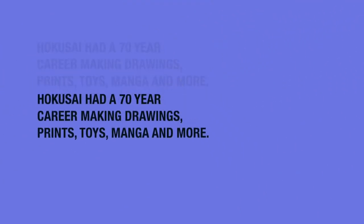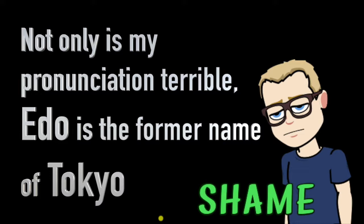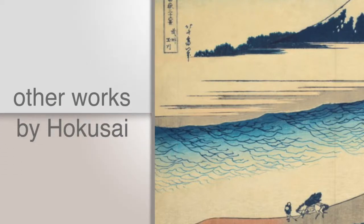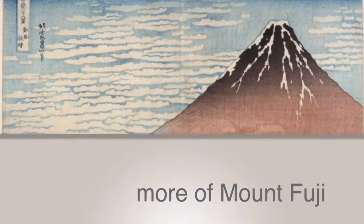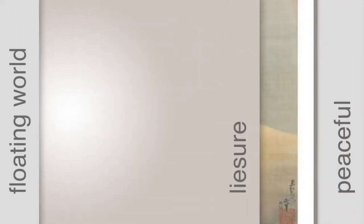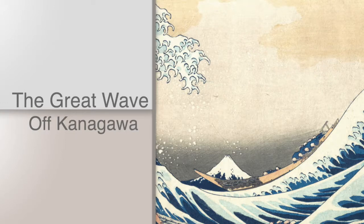That name roughly translates to 'old man mad about art,' which I just find delightful — that he is choosing to call himself the old man mad about art. So how old was he then? Let's see, 1760 to 1830 — so he's about 70 years old at that time. He was from Edo. This was the time when the ukiyo-e painting style — which roughly translates to 'images of the floating world' — was popular, featuring idealized landscapes and celebratory images of the daily pleasures of life. This piece is quite the contrast to that.